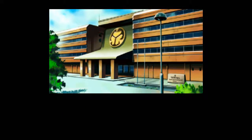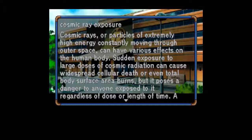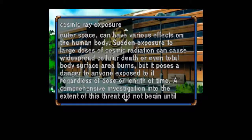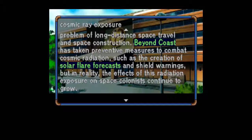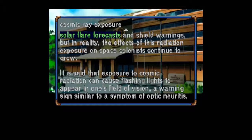Cosmic Ray Exposure: Cosmic rays — particles of extremely high energy constantly moving through outer space — can have various effects on the human body. Sudden exposure to large doses of cosmic radiation can cause widespread cellular damage or even total body surface area burns, but it poses a danger to anyone exposed, regardless of dose or length of time. A comprehensive investigation into the extent of this threat did not begin until mankind had already started colonizing space, and it is now the most significant problem of long-distance space travel and space construction. Beyond Coast has taken preventative measures such as the creation of solar flare broadcasts and shield warnings. Exposure to cosmic radiation can cause flashing lights to appear in one's field of vision, a warning sign similar to a symptom of optic neuritis.